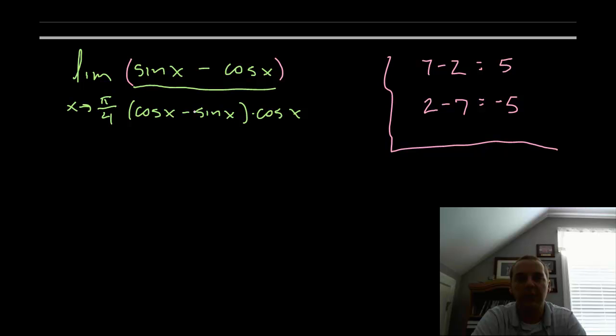So sine x minus cosine x divided by cosine x minus sine x - these two guys will cancel, but it will leave a factor of negative 1. And we can see that if you add any numerical value divided by the same numerical value but opposite sign you get negative 1. There is still a cosine x in the denominator.